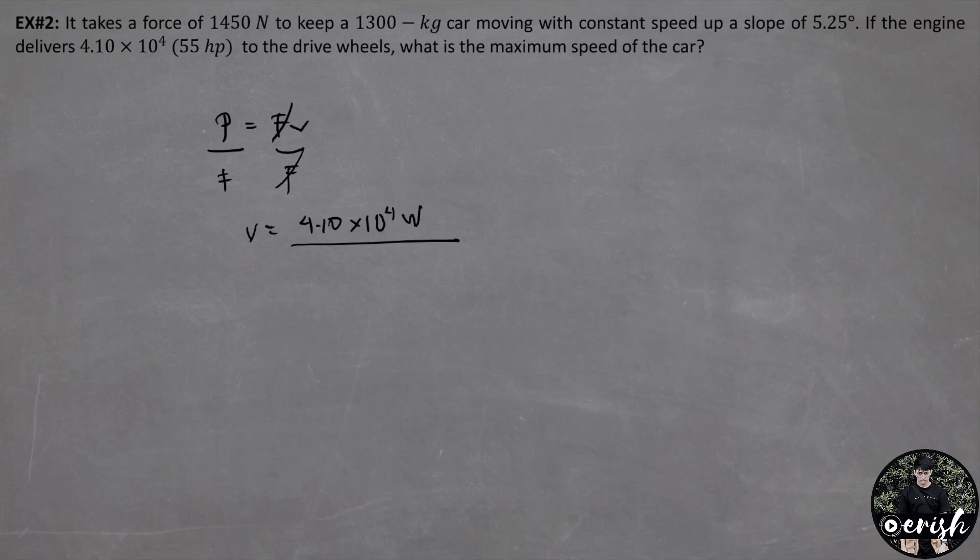Velocity is equal to... the power is 4.10 times 10 raised to 4 watts. And we divide by the force. The given force is 1,450 newton. The maximum speed by calculating is equal to 28.3 meters per second.